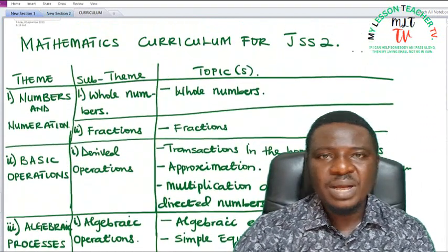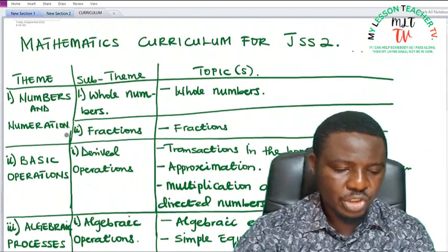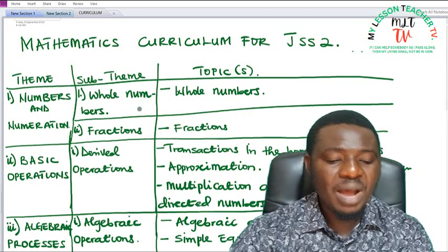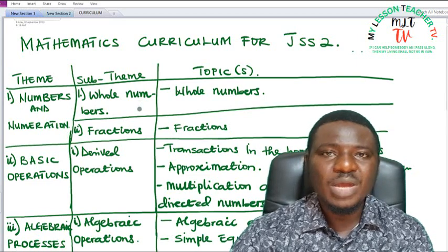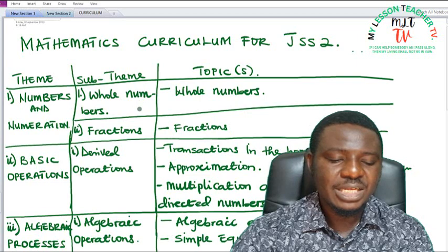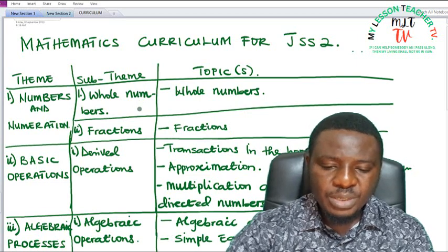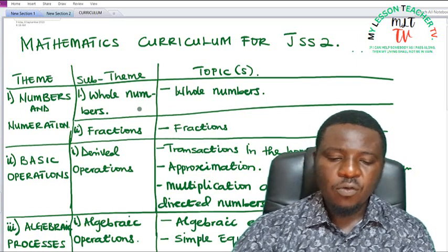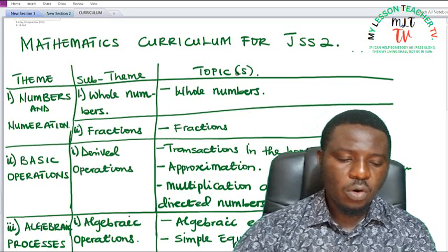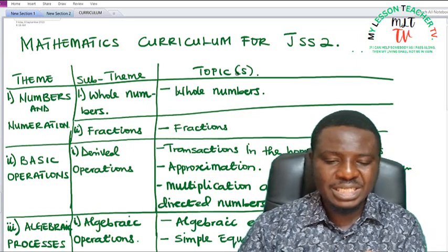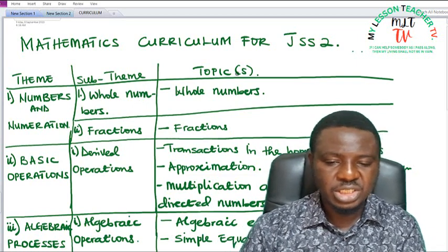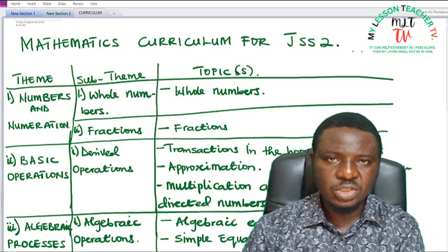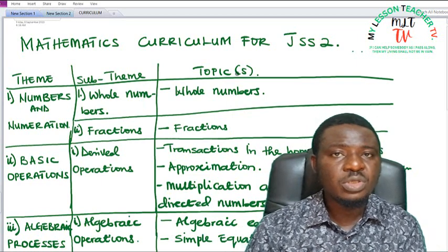Under Numbers and Numeration, we have the sub-themes Whole Numbers and Fractions, same as what we have in GSS1, but the topics are quite different. For Whole Numbers, we also have whole numbers in GSS2, but the whole numbers taught in GSS2 are quite different — rather, they are a continuation of what was taught in GSS1.